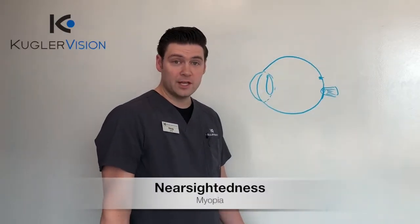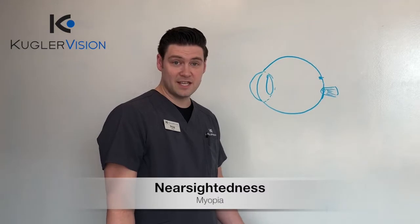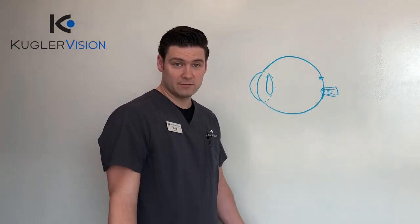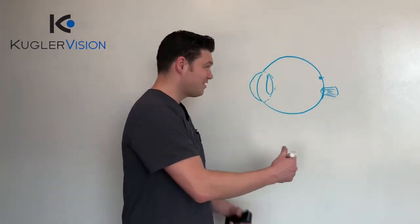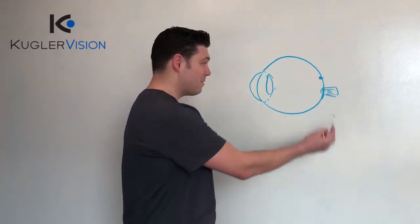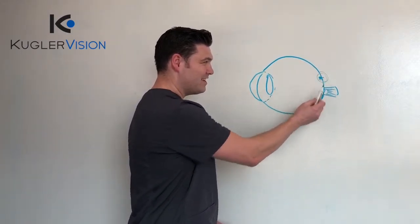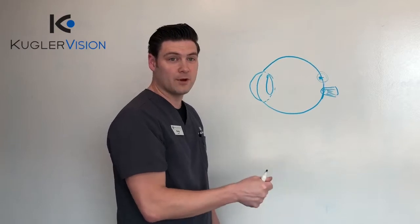Nearsightedness or myopia is when the focus of the eye places the image before the retina. Let me explain. Think of the eye as a camera. The macula, which is in the retina, is the most sharp part of the film of the camera.